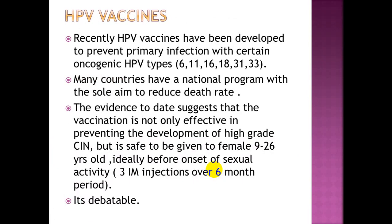HPV vaccines have been developed to prevent primary infection with certain oncogenic HPV types, and many countries have a national program with the sole aim to reduce death rates. The evidence suggests that vaccination is effective in preventing high-grade CIN and is safe for females aged 9 to 26 years, ideally given before onset of sexual activity, as 3 intramuscular injections over a 6-month period.